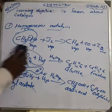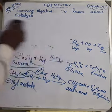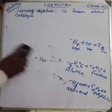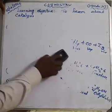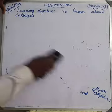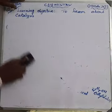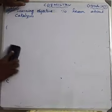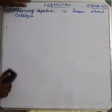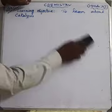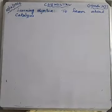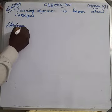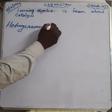Next, heterogeneous catalyst: the reactant and the catalyst are present in different phases. For example, the contact process — the preparation of sulfur trioxide: SO₂ plus O₂ in the presence of platinum (Pt) or vanadium pentoxide (V₂O₅) gives SO₃.